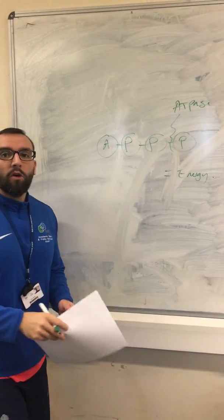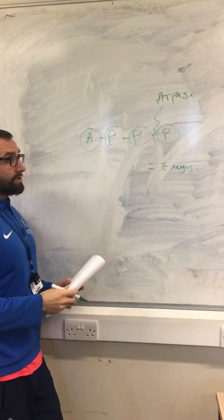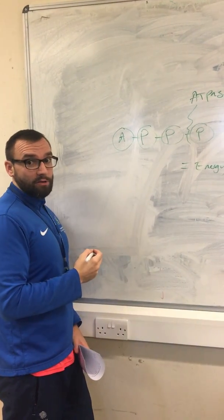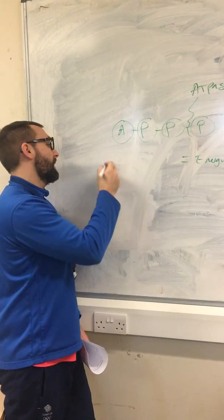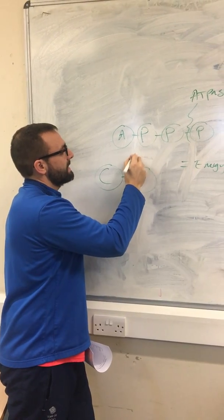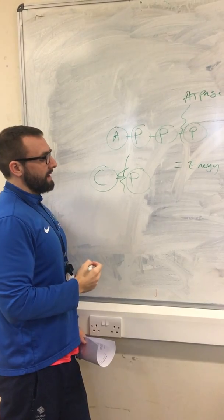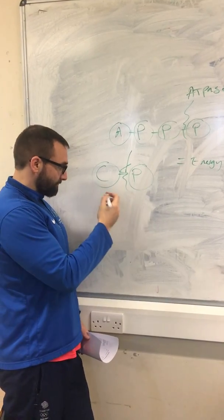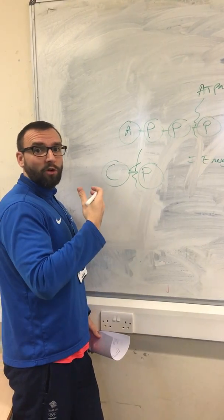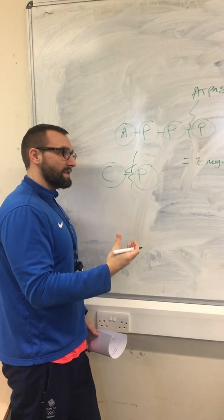Then I would move on to the creatine phosphate system and talk about how it produces energy, how much energy that system produces, and I might even draw it out — there's a C and a P, and when creatine kinase breaks this bond it resynthesises ATP. I'd also talk about how every time it does that it only produces one ATP, how much energy in terms of time it produces, and the recovery time of that system.